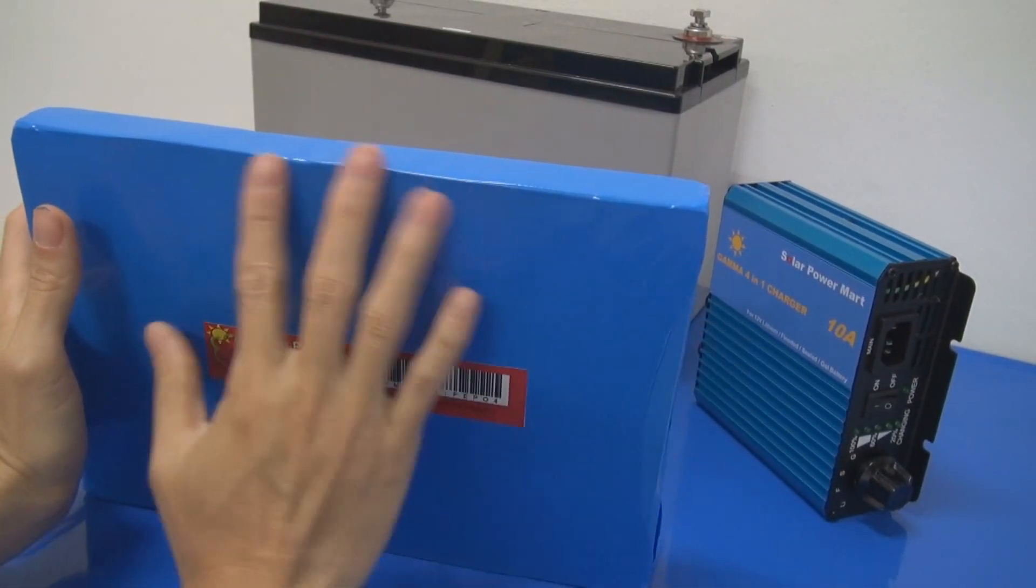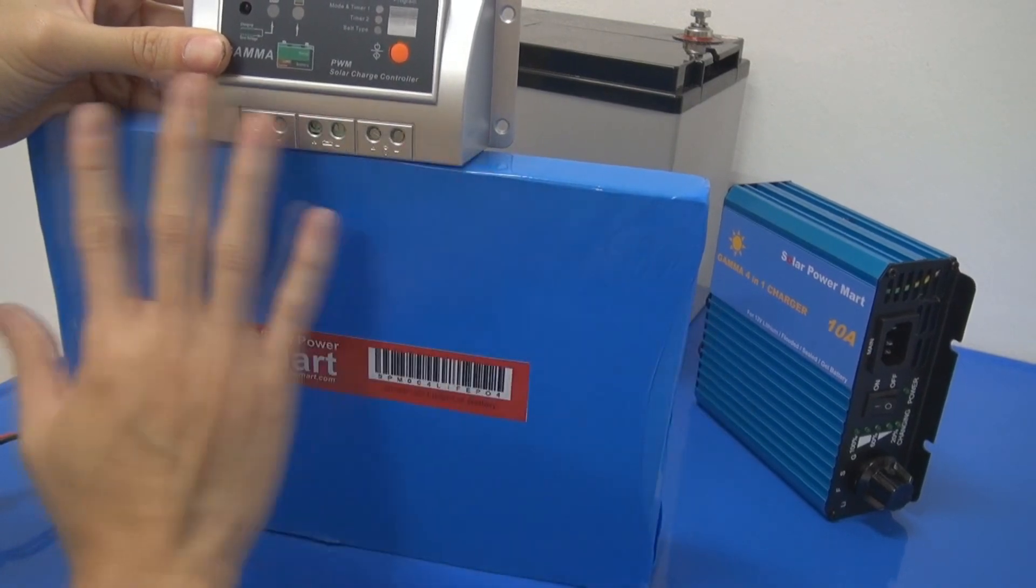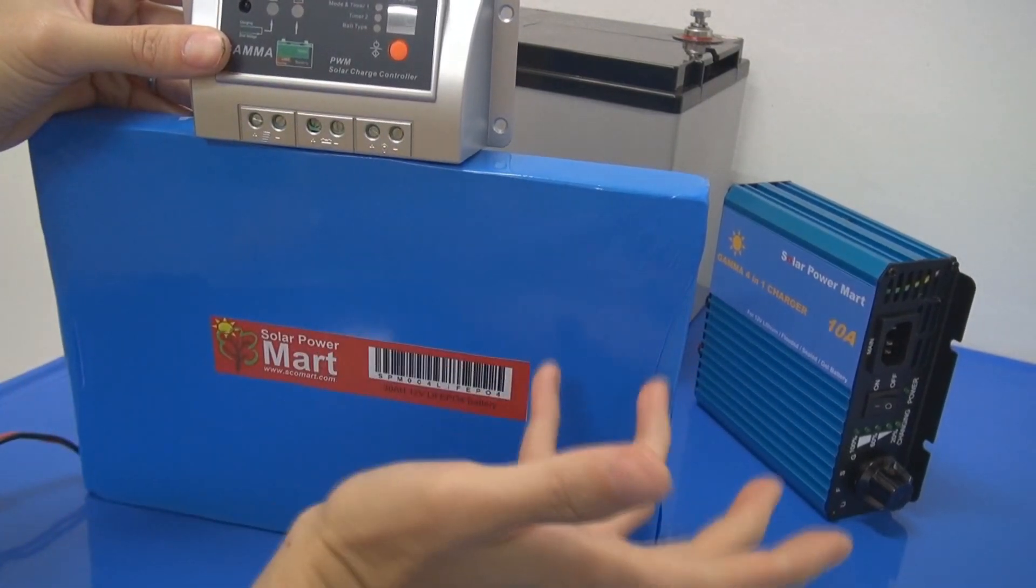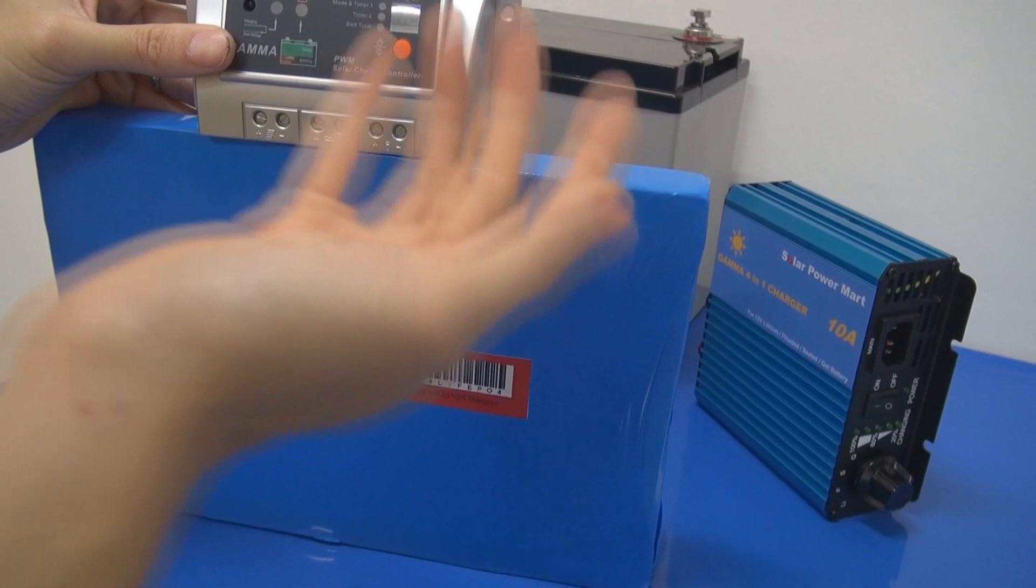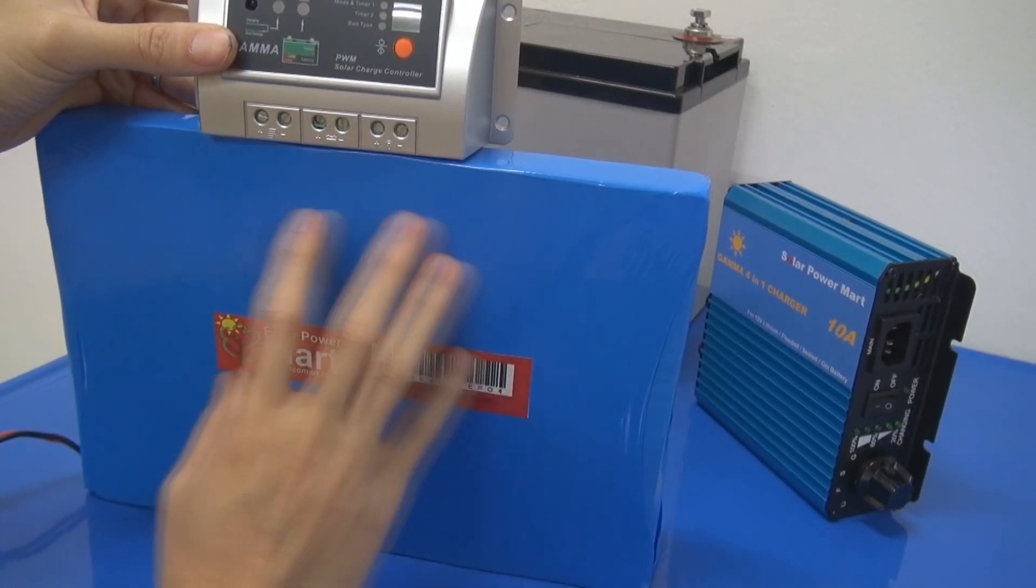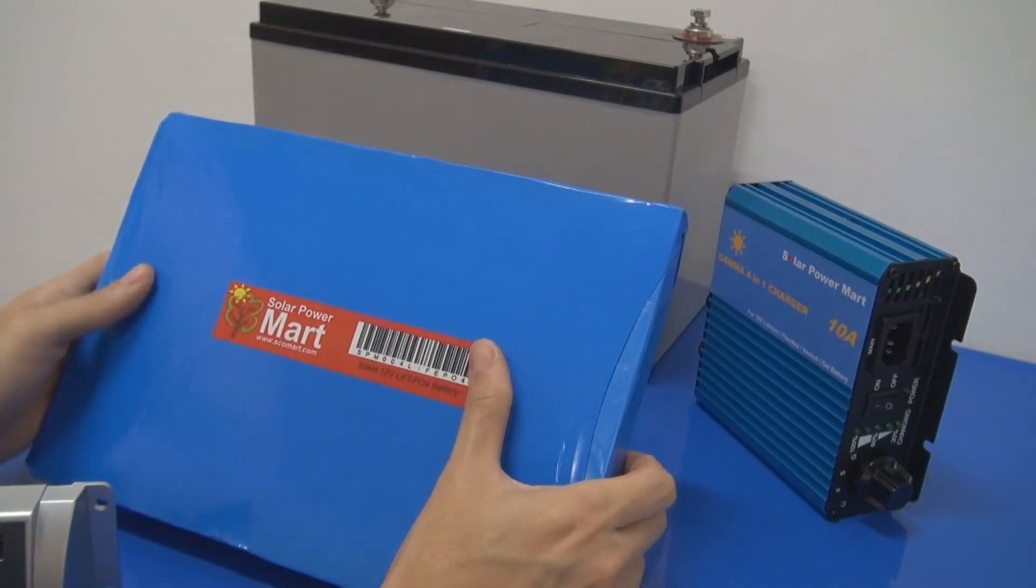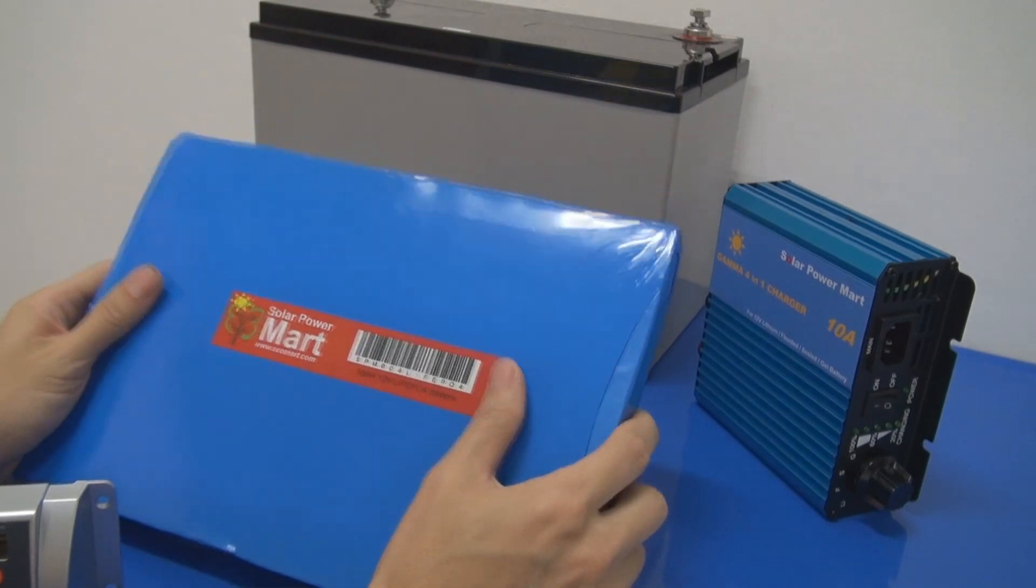It becomes very small, and with a charge controller, basically you can embed the whole thing inside a solar panel. You can do that because this can work in very hot temperatures. Another benefit is—I want to explain here, just bear with me—